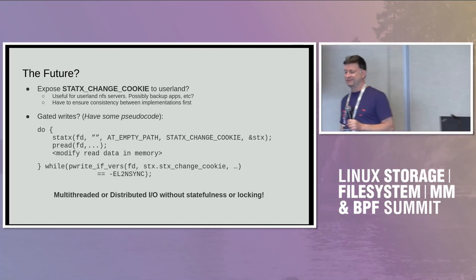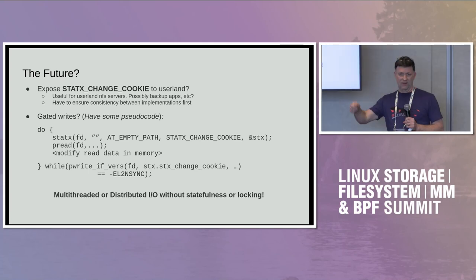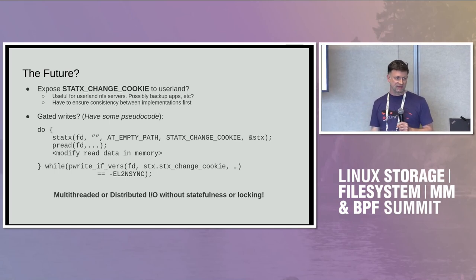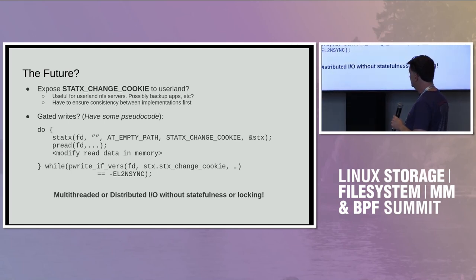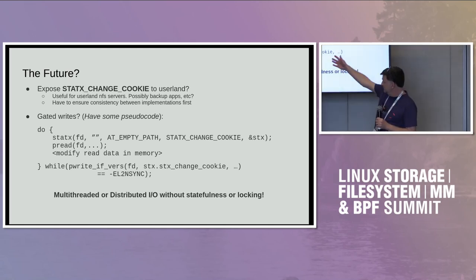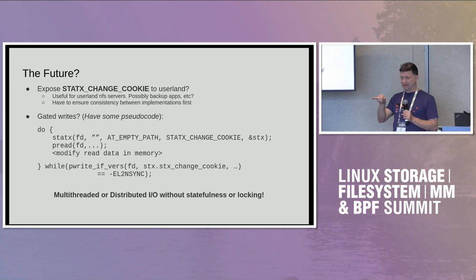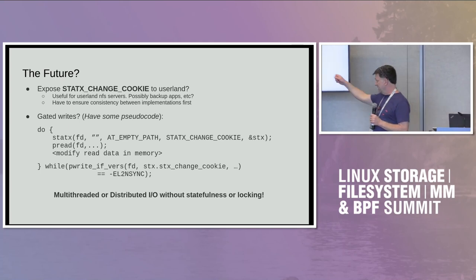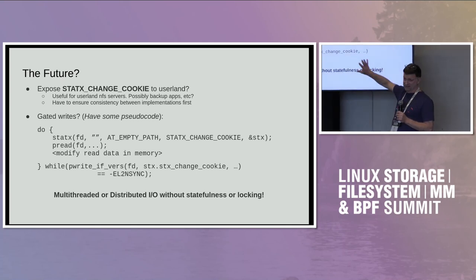This is where I really want to go. In the future I want to make this queryable from userland, because having an infinitely granular change counter is very useful for userland applications of all sorts. What I'd really like to build is a gated write: fetch the change attribute, do a read, modify it, and then try to write it back only if the version hasn't changed. I used a very similar scheme in some Ceph work and I really liked it because I didn't need any locking — in a distributed situation, locking is nasty.